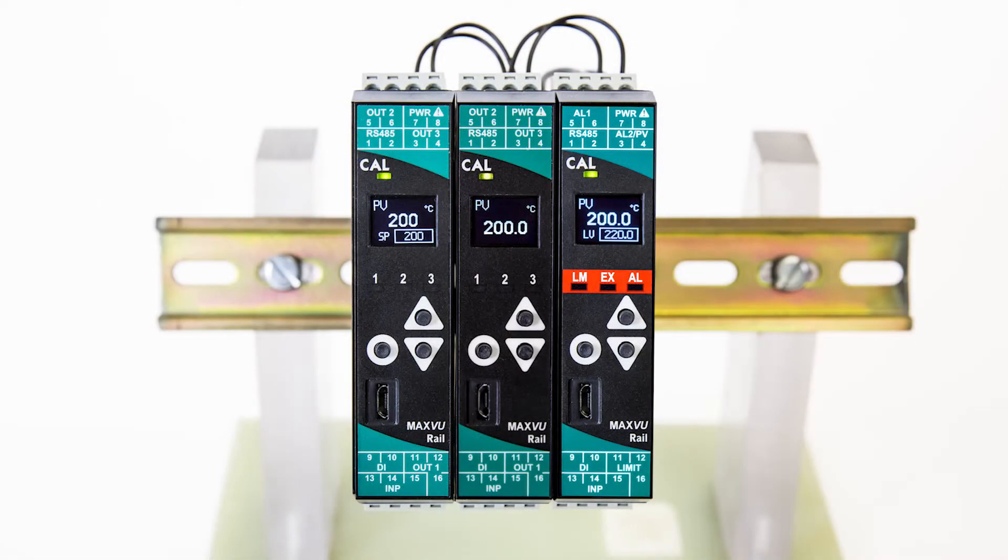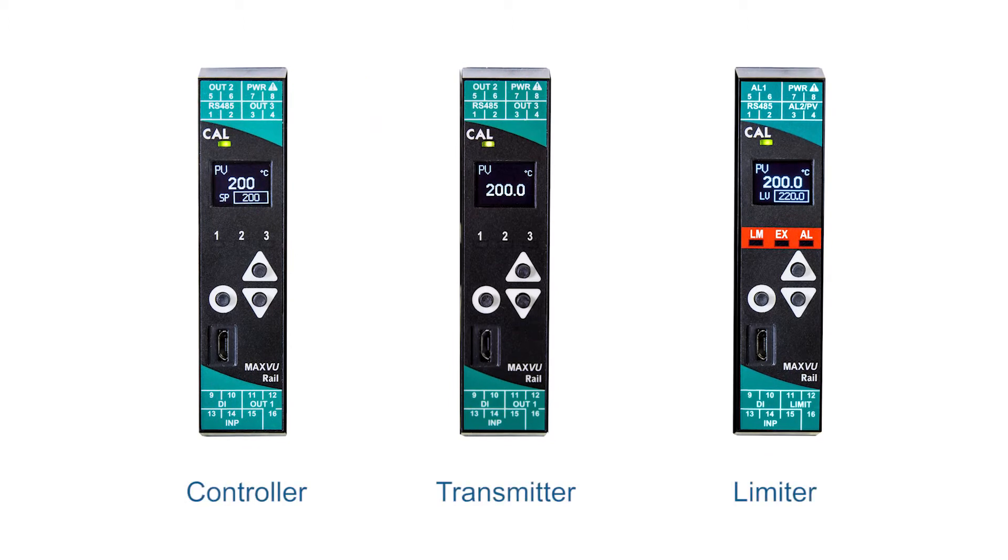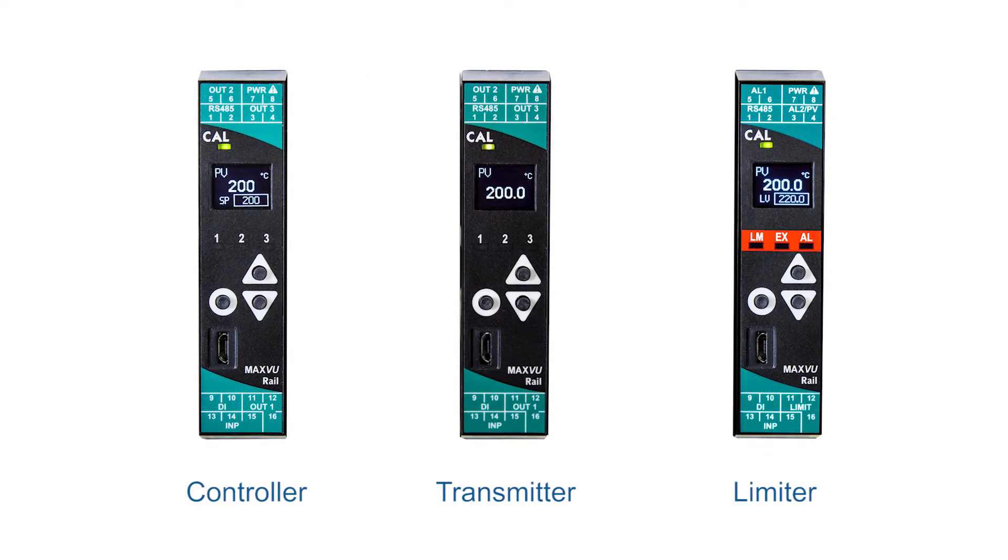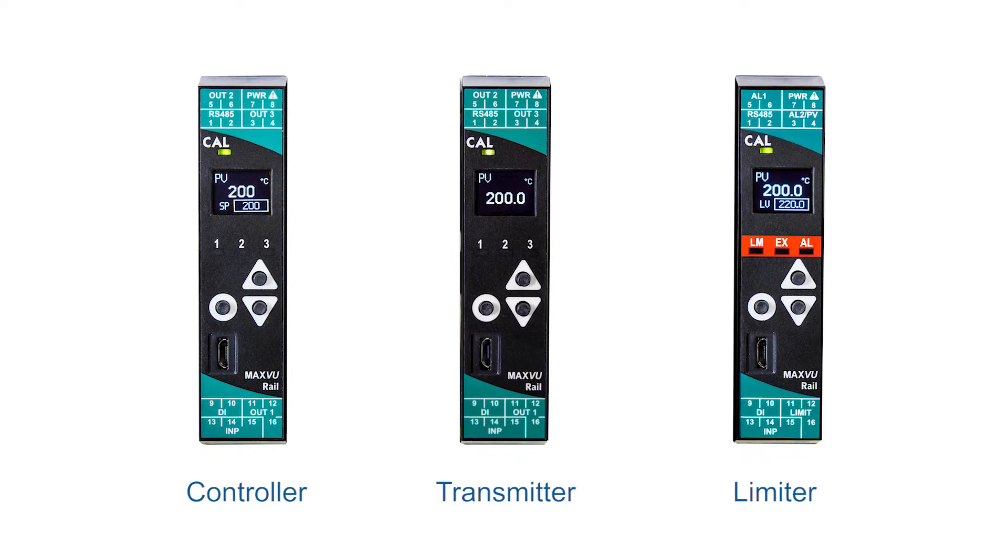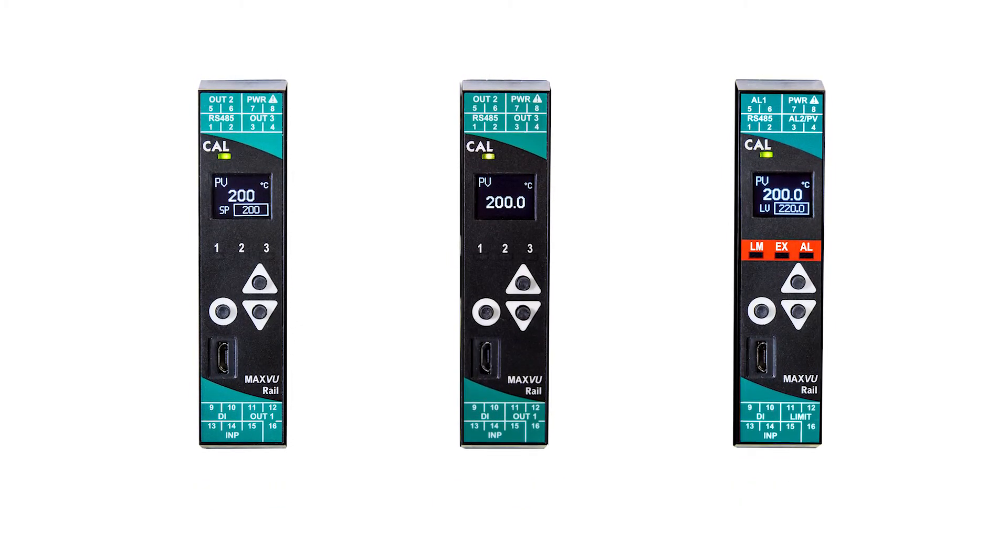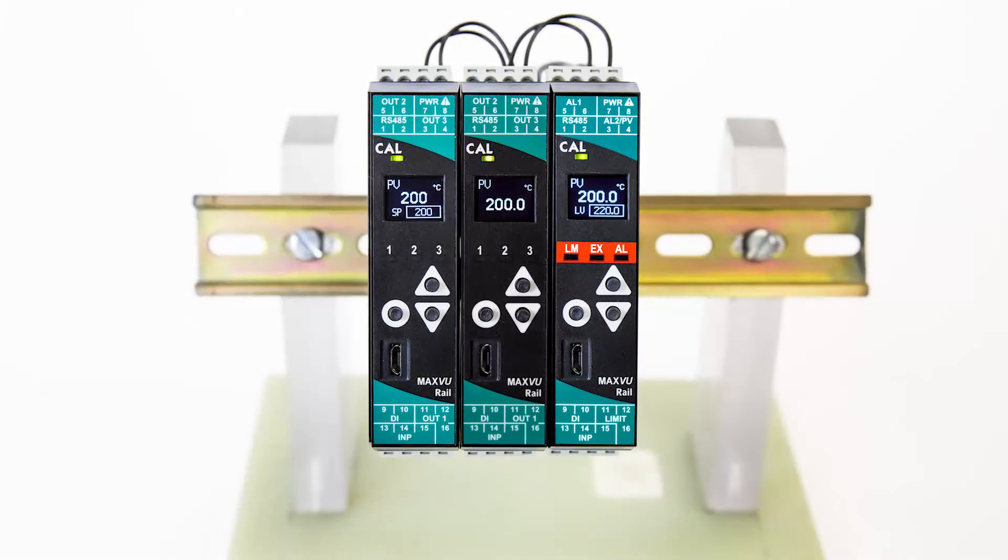MaxView Rail provides a wide range of options within a single family: a controller for temperature regulation, a transmitter for process monitoring, and a limiter for machine protection. The devices can be used as standalone or integrated within a wider system via communications.